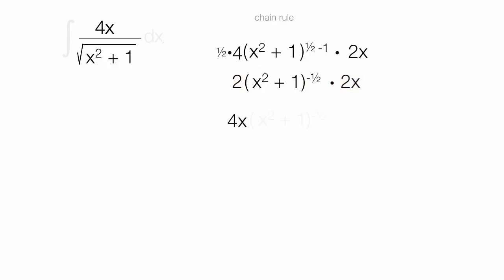So now I have 4x times x squared plus 1 to the negative 1 half power. Now I have 4x divided by the square root of x squared plus 1. Anything raised to the 1 half power is the square root of. And since it's a negative, I put it on the denominator. So look at that. That's what I'm talking about right here. That's the right answer.